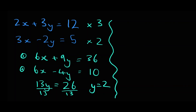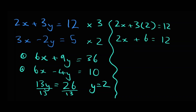Now that we have y, let's substitute it into our first equation to work out what x is. So 2x plus 3 times 2 equals 12, which means 2x plus 6 equals 12. Subtracting 6 from both sides gives 2x equals 6, and dividing both sides by 2 gives x equals 3. So now we've figured out both y and x.